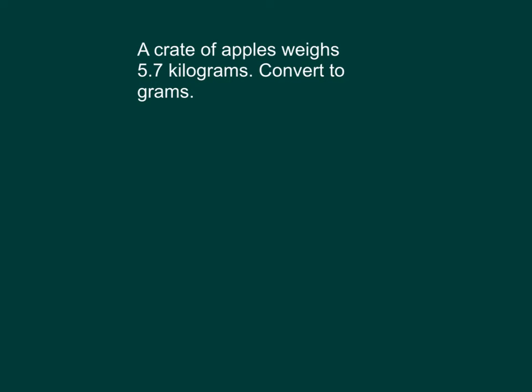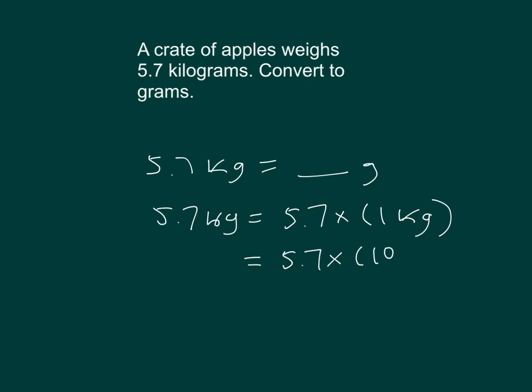A crate of apples weighs 5.7 kilograms, convert to grams. Okay, let's write that out first. That's 5.7 kilograms equaling blank grams. And then we can show our work. 5.7 kilograms equals 5.7 times 1 kilogram. That's 5.7 times... There's 1,000 grams in a kilogram. That's why we can replace it with 1,000 grams there. Multiplying that out, that's 5,700 grams.